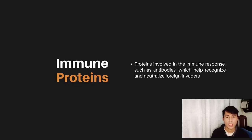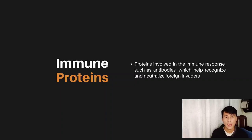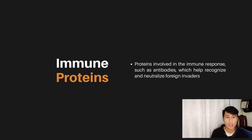Lastly, immune proteins are proteins involved in the immune response, such as antibodies, which help recognize and neutralize foreign invaders. One example is immunoglobin, also known as an antibody. Antibodies are produced by white blood cells and are specific to a particular pathogen — they recognize and bind to pathogens, marking them for destruction by other components of the immune system. Another example is cytokines, which are small proteins that coordinate the immune response by communicating between cells, such as attracting immune cells to the site of an infection and regulating antibody production.